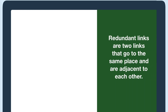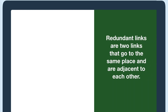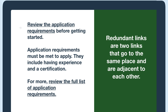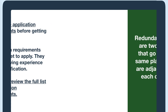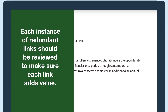Redundant links are just what they sound like: two links that go to the same place and are adjacent to each other. This can be two links right next to each other, or the same link at the top and bottom of the page, but with no other links between them. Not all redundant links are issues, but each instance should be reviewed to make sure each link adds value.